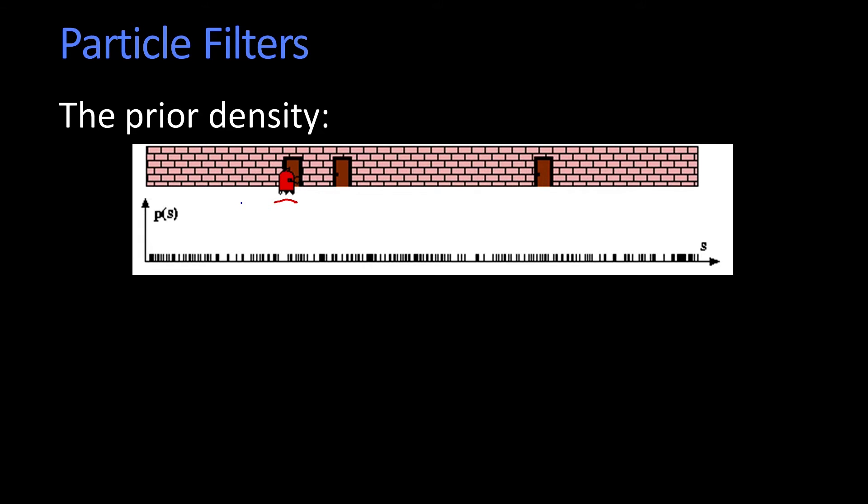So R3D3 is sitting over here, and this here is its prior belief about where it is right now. We have no idea how it got that value. This is its random distribution, and you can see it's a pretty uniform distribution of particles.